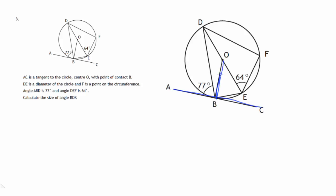The first thing I notice is that there's a radius OB. Think of it like a bicycle wheel rolling on a road — when the spoke reaches the road, we get a right angle. A radius of a circle is at right angles to a tangent to that circle.